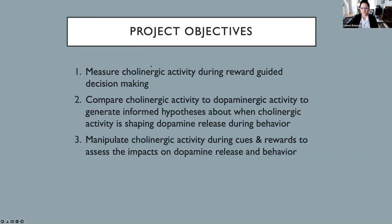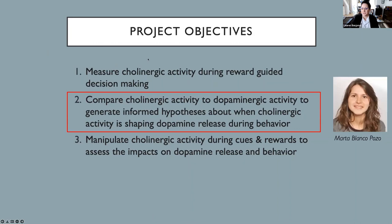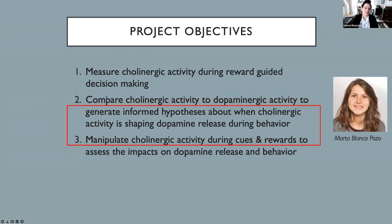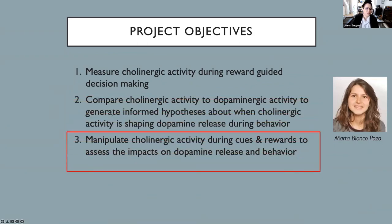So far I've shown you results from the first project objective — measuring cholinergic activity during reward-guided decision making. I'm very lucky that a graduate student in the lab, Marta Blanco-Poso, has been recording dopamine activity in the same task. We're currently working together to cross-correlate the dopaminergic and cholinergic signals obtained, so we can determine at what points in the task acetylcholine is likely influencing dopamine. We'll then use this to inform further experiments to test the actual causal relationships between these two systems by manipulating cholinergic activity during cues and rewards.